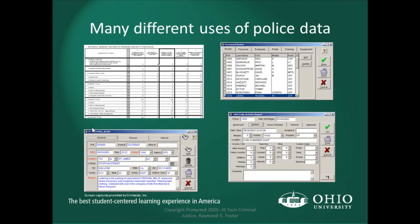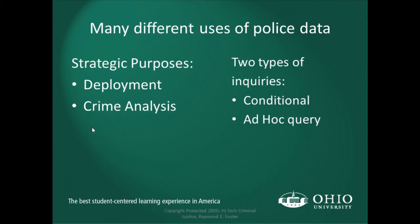There are many different uses of police data. These screens show things like a daily log report, personnel roster, field interviews — FI cards in the bottom left-hand corner — as well as a monthly return of offenses known to police, providing statistical information. The many different uses of that data can lead to a strategic purpose. As we learned in recent chapters, strategic information is used to help deployment and analysis — it's really about manpower and shifting resources to better solve crime.